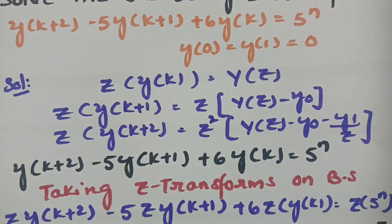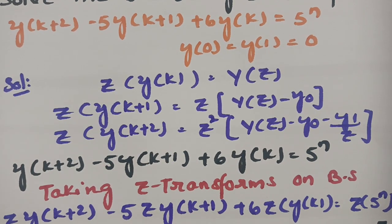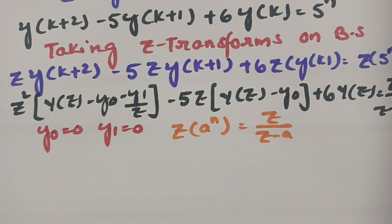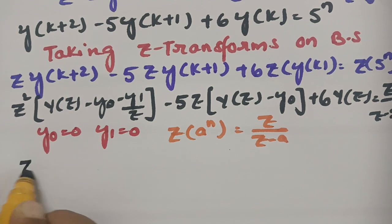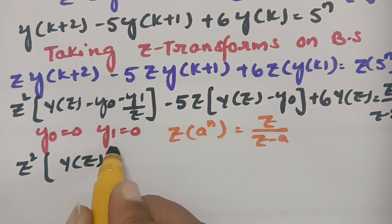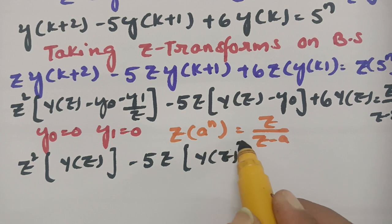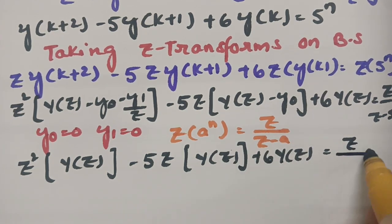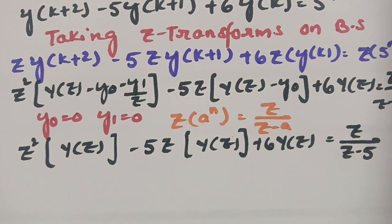Applying the initial conditions y(0) = 0 and y(1) = 0, the equation simplifies to: z²·Y(z) - 5z·Y(z) + 6·Y(z) = z/(z - 5).